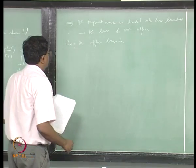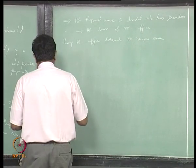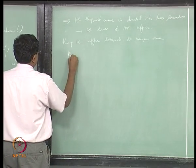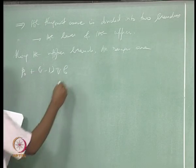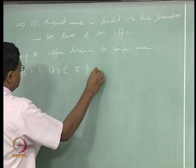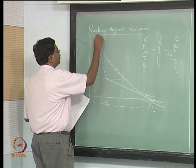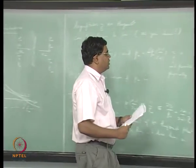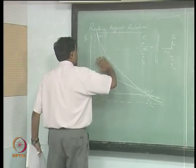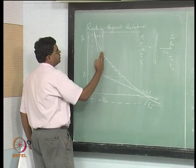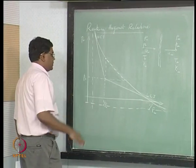Along the upper branch, the range of p∞ is: p₀ + (γ−1)q·ρ₀ ≤ p∞ < ∞. The lower bound p₀ + (γ−1)qρ₀ increases as q increases, meaning the minimum pressure on the upper branch shifts upward with greater heat release.